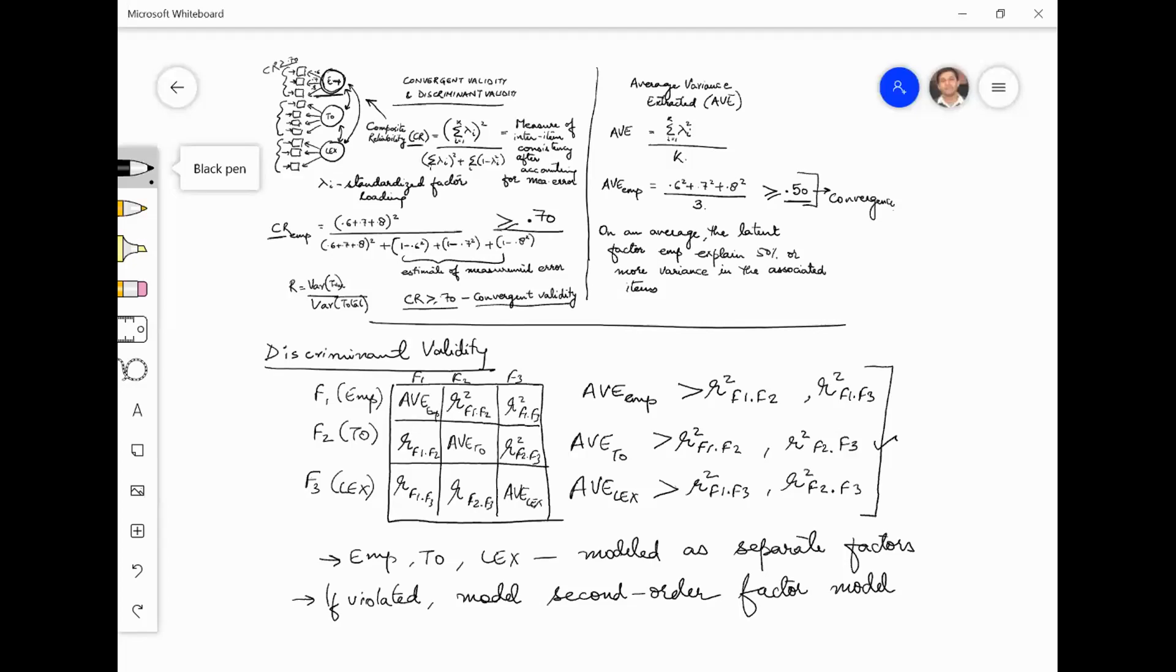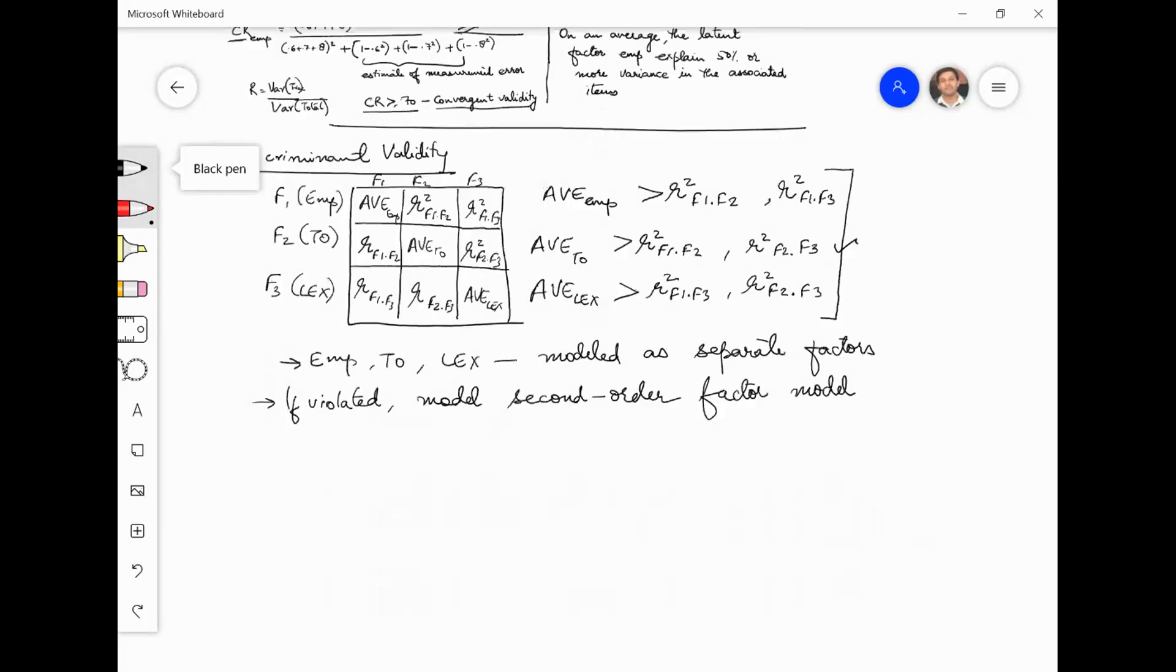One thing I wanted to clarify is, what does it mean that if violated? Is it like both the convergent validity as well as the discriminant validity not meeting the threshold, and then we will go for the second-order model building, or any one? Usually you can try out multiple combinations. For example, if one construct is not discriminant with another construct, let's say two out of the three do not come out to be discriminant, that means they are highly correlated. Then you can model it as a two factor model instead of a three factor model.